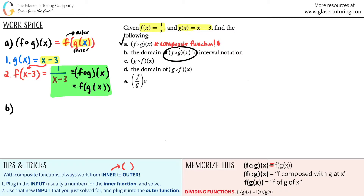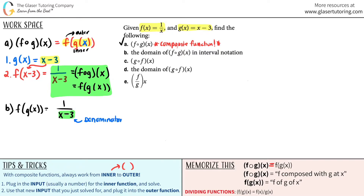For part b, they want the domain of this composite function in interval notation. If f of g of x equals 1 over x minus 3, we need to think about exclusion values for the domain. For denominators, remember: the denominator cannot equal zero, because anything divided by zero is undefined.